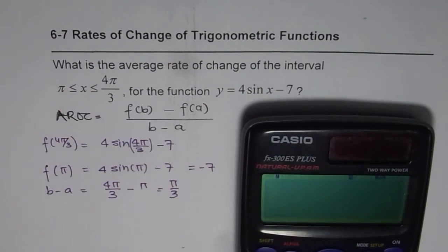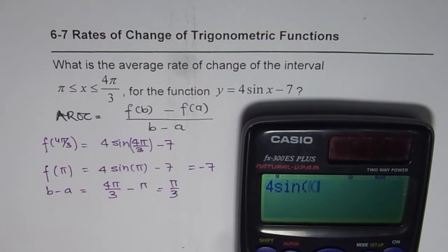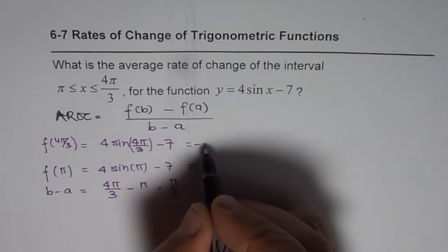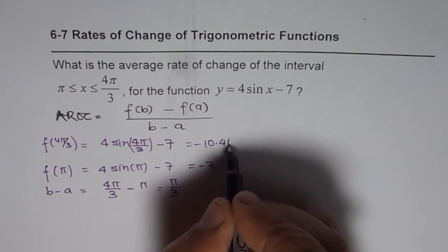So that is 4 times sin of 4π divided by 3 bracket close equal to minus 7 equals to and then we will write decimal value which is -10.4641. So it is -10.4641.